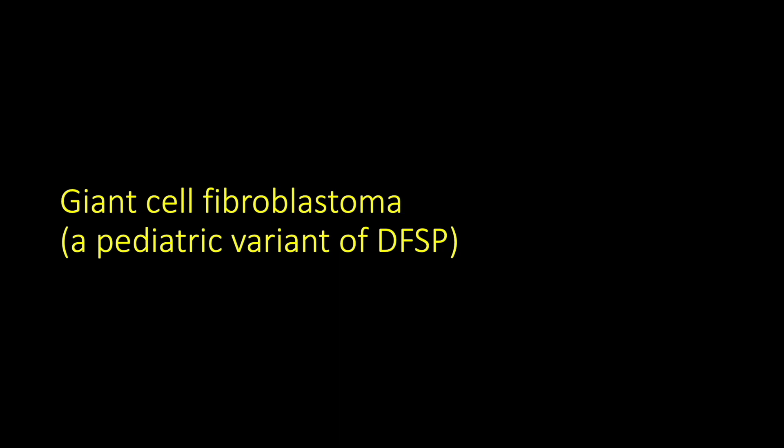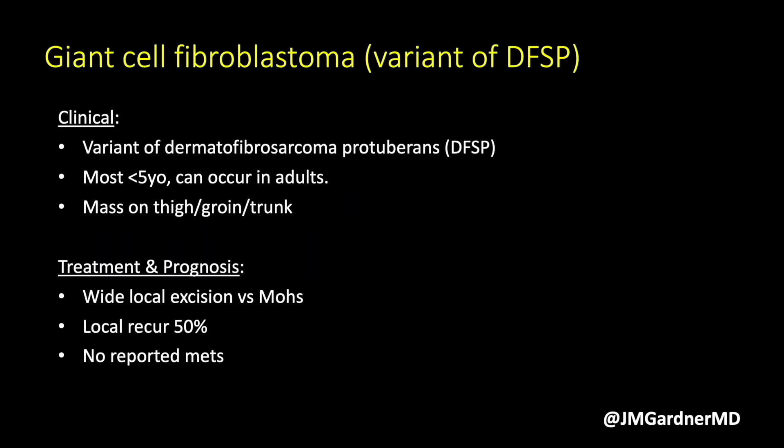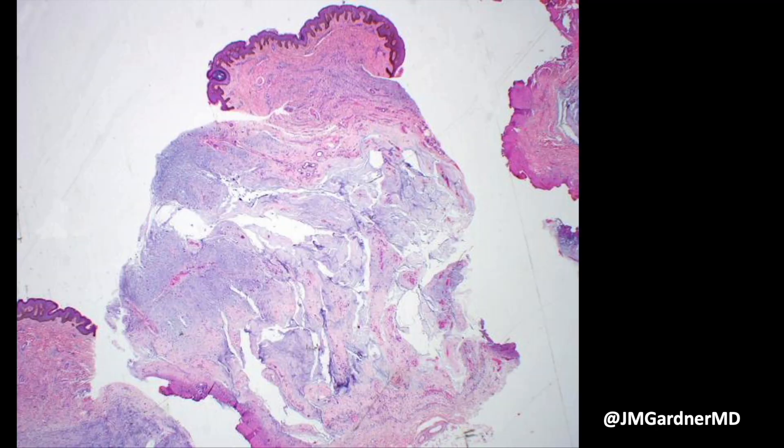Giant cell fibroblastoma is a pediatric variant of DFSP — usually in kids, but adults can have it too, oftentimes mixed with conventional DFSP. It's treated the same way; it's basically just a morphologic variant of DFSP. To my knowledge, there have not been any reported metastases, though it may just be that it's so rare. It's relatively rarer than traditional conventional DFSP, but no reported metastases yet in pure giant cell fibroblastoma.